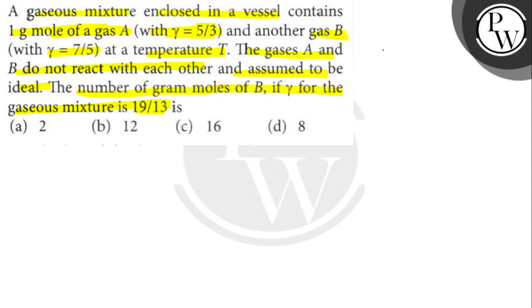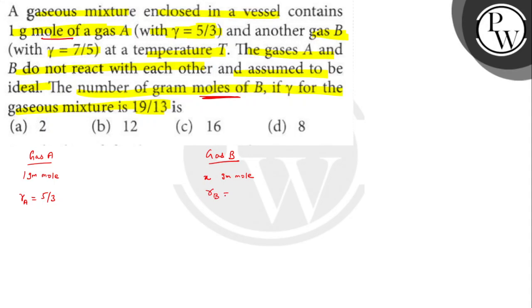We have gas A with 1 gram mole, and gamma of A is 5/3. Gas B has gamma 7/5. In the mixture of A plus B, the mixture has gamma equal to 19/30.